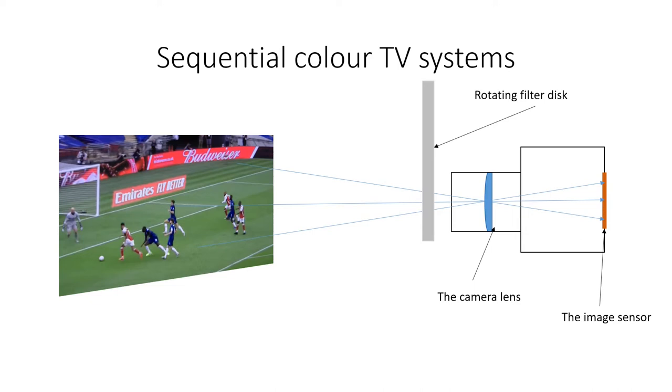Early experimental color television systems, for example the system proposed by CBS in the USA, captured the red, blue and green content by capturing the colors in each field in sequence, one after the other. They did this by mechanically rotating a disc in front of the lens with red, green and blue color filters that only pass one of the three colors.